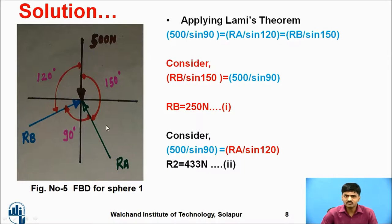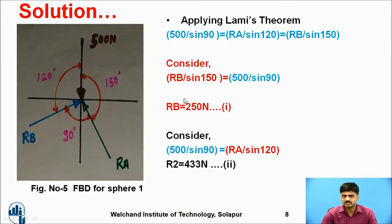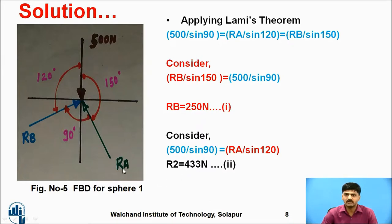Applying Lami's theorem: 500/sin90 = R_A/sin120 = R_B/sin150. From R_B/sin150 = 500/sin90, we get R_B equals 250 newtons. From R_A/sin120 = 500/sin90, we get R_A equals 433 newtons. So by applying Lami's theorem to sphere one, we easily calculate R_A = 433 N and R_B = 250 N.